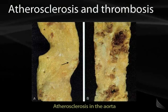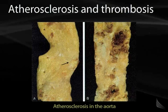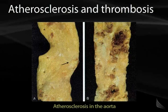Here we see a gross pathology image of an aorta that's been sliced open, showing how severe this patient's atherosclerosis is, with complicated plaque in the aorta associated with thrombosis.